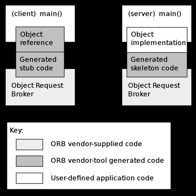CORBA enables communication between software written in different languages and running on different computers. Implementation details from specific operating systems, programming languages, and hardware platforms are all removed from the responsibility of developers who use CORBA. CORBA normalizes the method call semantics between application objects residing either in the same address space or in remote address spaces, same host, or remote host on a network. Version 1.0 was released in October 1991.